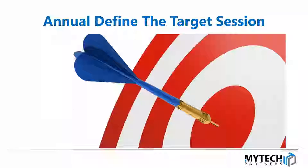One of the things we call this is a 'define the target' session — we need to know what target you're trying to hit. We've had IT people come to us saying they were told to put together a budget for next year, and when we asked what the organization's goals were, they had no idea whatsoever. So they could put together a budget, but the business expectations and the budget didn't align.